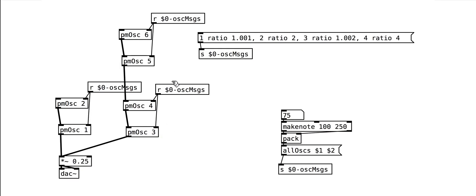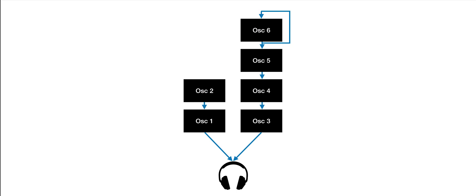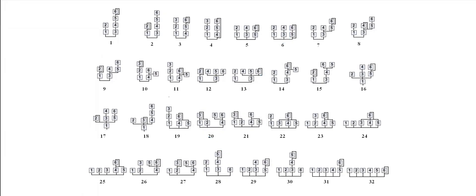This tutorial is the third in our DX7 phase modulation series. In the last tutorial, we created six phase modulation oscillators and created a system to send messages to them. The oscillators were arranged in the formation of DX7 algorithm number 1. The DX7 has 31 other algorithms though, so how do we change our oscillator routines dynamically?